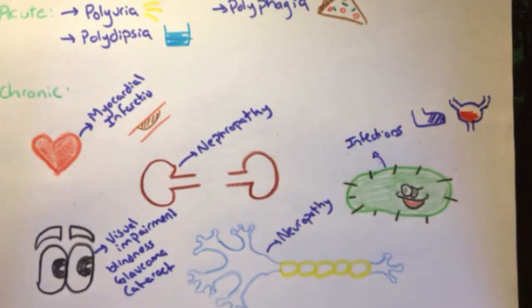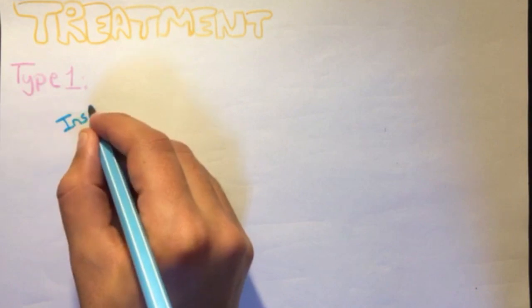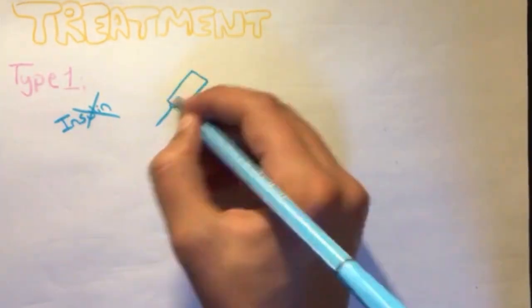After discussing diabetes mellitus and its complications, how can we prevent it or treat it? As for the treatment, it differs between type 1 and type 2. Starting off with type 1, since there is absolute insulin deficiency, hence the treatment will be replacing the missing insulin.